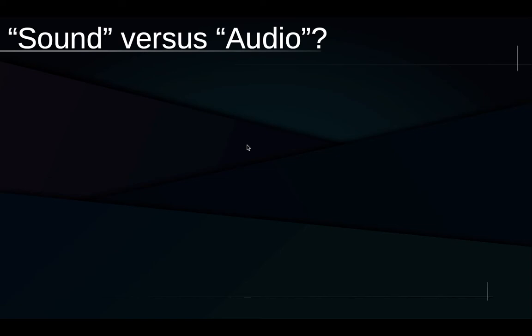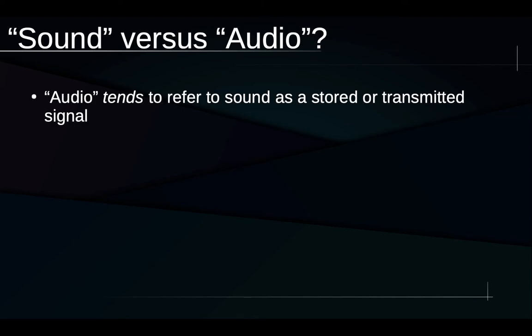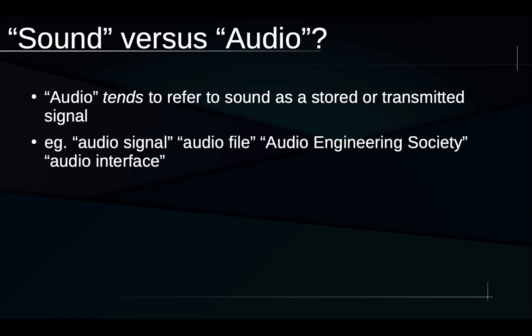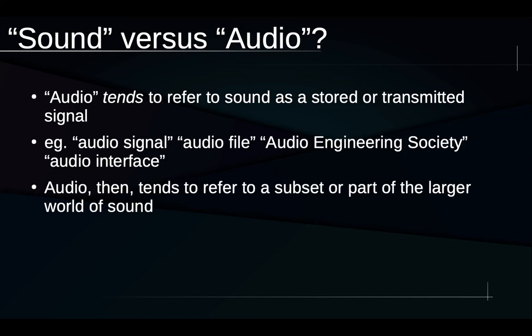We're getting close to the end of this module. And I want to make a comment about terminology, about the terminology sound versus audio, since we're going to be using both terms a lot in this course. Audio tends to refer to sound as a stored or transmitted signal. So something in a cable, something in a record or in an audio file. If we're dealing with those situations, we're definitely dealing with something where we can use the word audio. For example, audio signal, audio file, the Audio Engineering Society is devoted to people who are often working with stored or transmitted signals. And audio interface is a piece of audio hardware that allows us to deal with sound as a signal. So audio then refers to a subset or part of the larger world of sound.